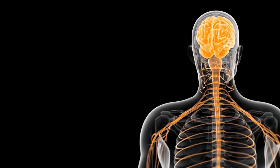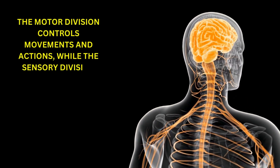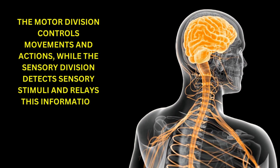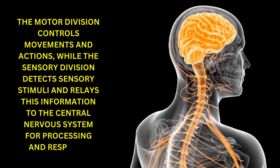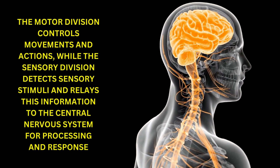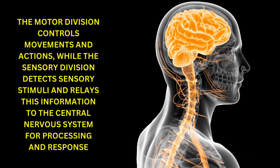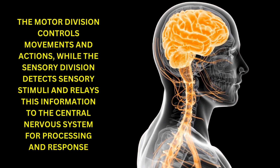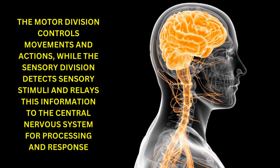The motor division controls movements and actions, while the sensory division detects sensory stimuli and relays this information to the central nervous system for processing and response. Together, these divisions enable organisms to interact with their environment and coordinate their bodily functions.